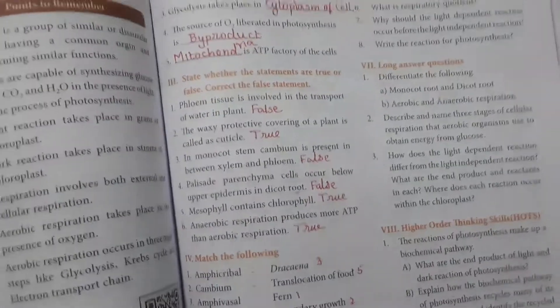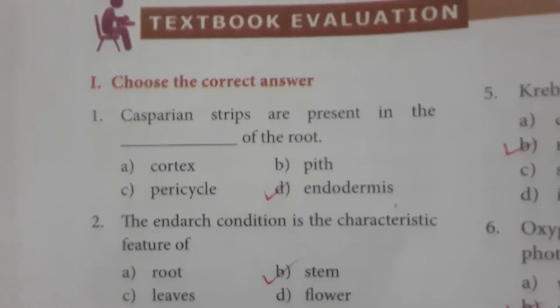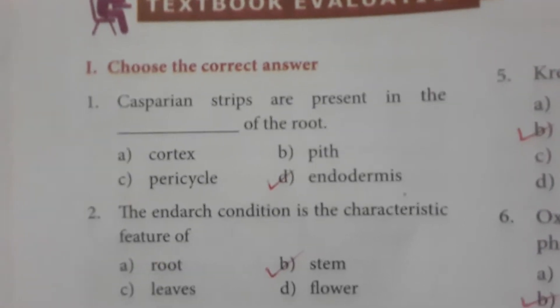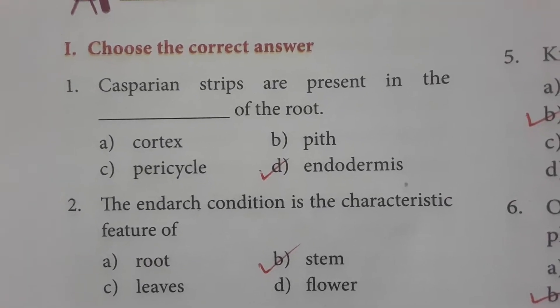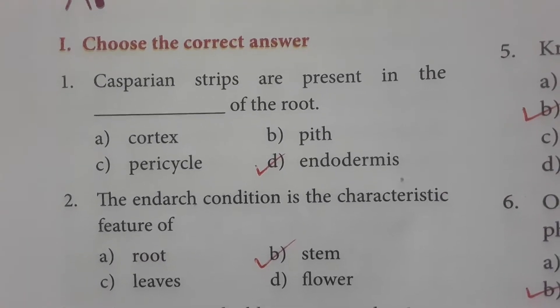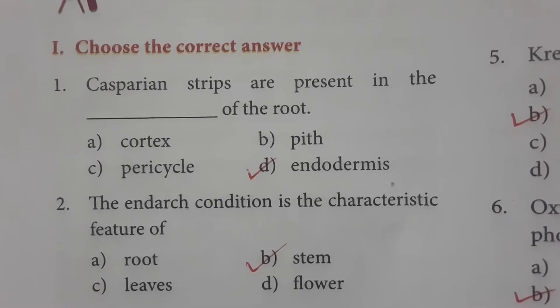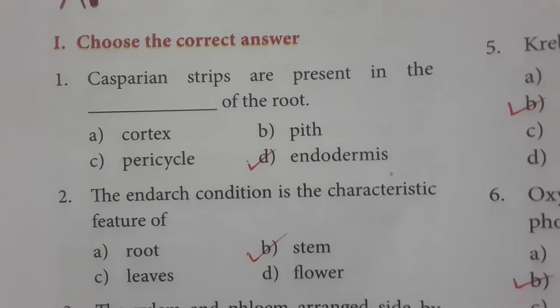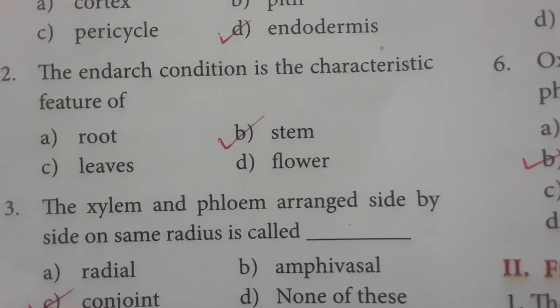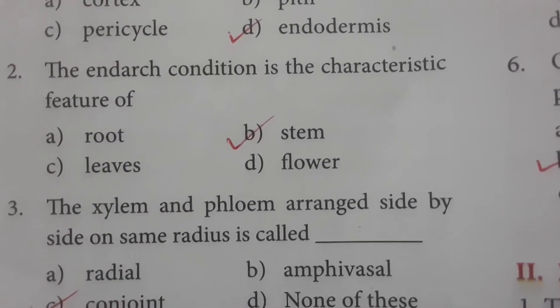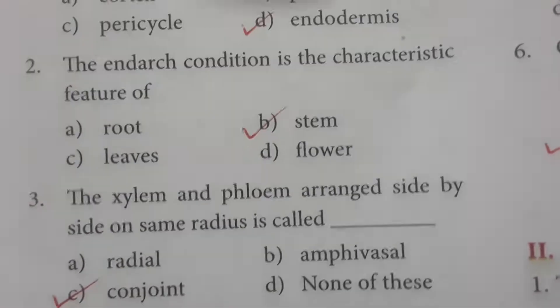First, choose the correct answer. Casparian strips are present in the endodermis of the root. The endodermis condition is the characteristic feature of the stem.